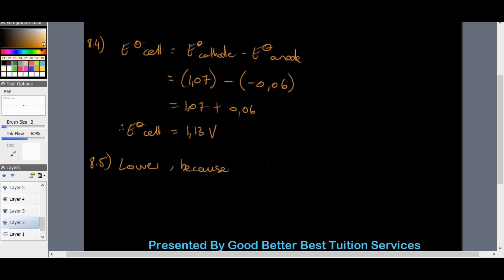It is lower because, all right, we can put full sentences in here, because Br2, all right, is a stronger oxidizing agent. Because remember, as we go up the table for A, our oxidizing agent strength, it increases.